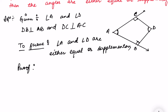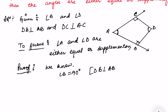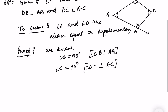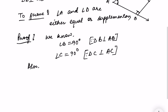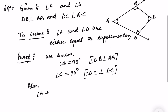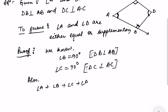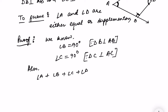Let us start our proof. We know angle B is equal to 90 degrees because line DB is perpendicular to AB — perpendicular meaning this angle is 90 degrees. Angle C is also equal to 90 degrees, since DC is perpendicular to AC. Also, we know angle A plus angle B plus angle C plus angle D — since this forms a quadrilateral — if we add all these angles, it will be equal to 360 degrees.